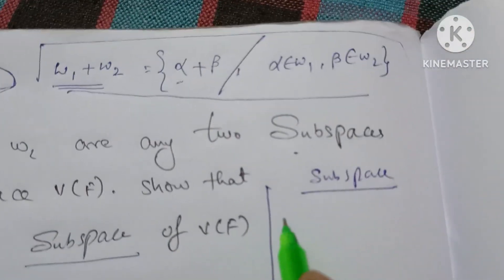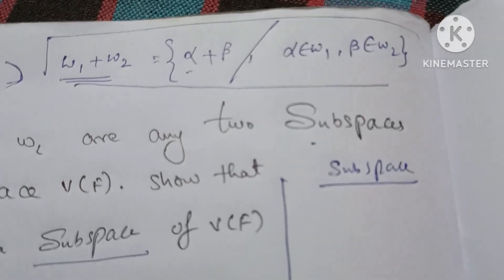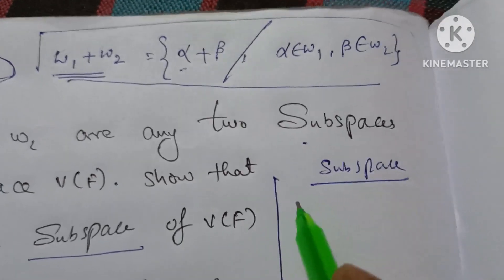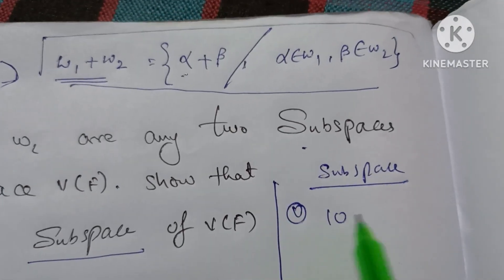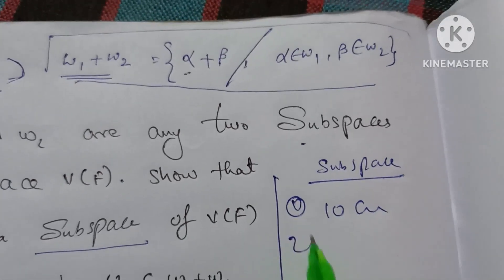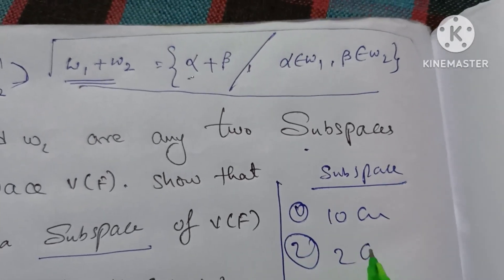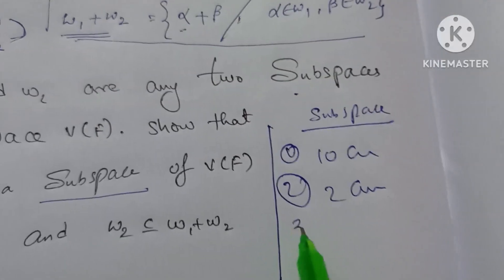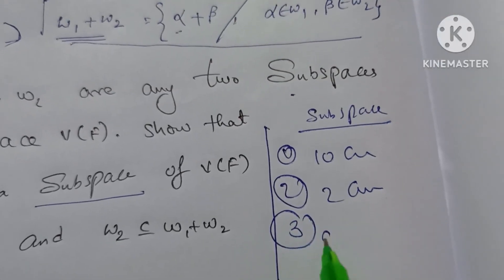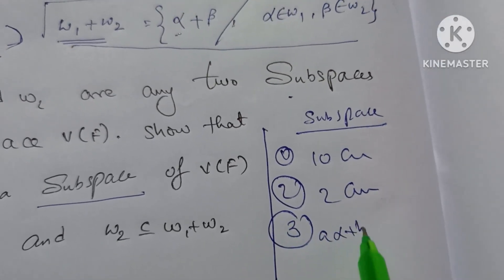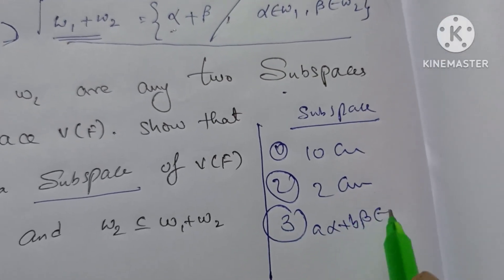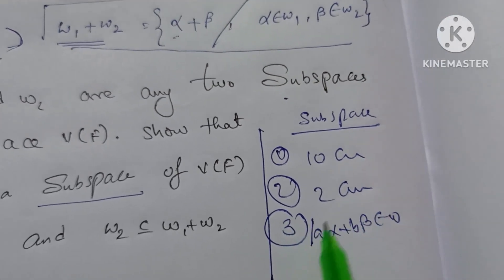Let's talk about three methods. First method: 10 conditions. Second method: two conditions. Third method: a·alpha plus b·beta belongs to W — this is one condition.